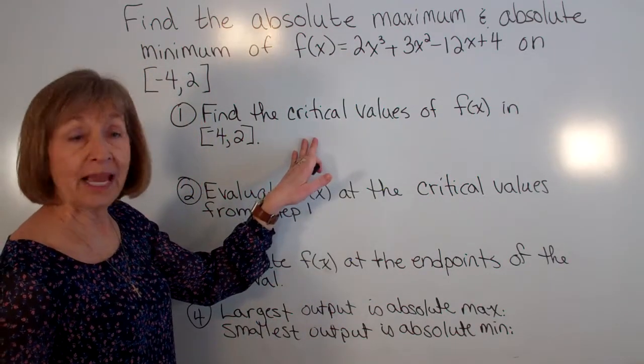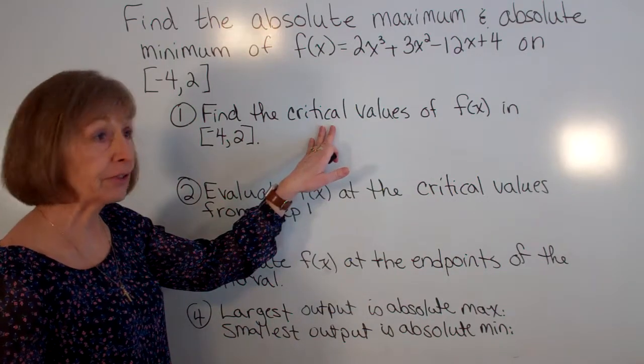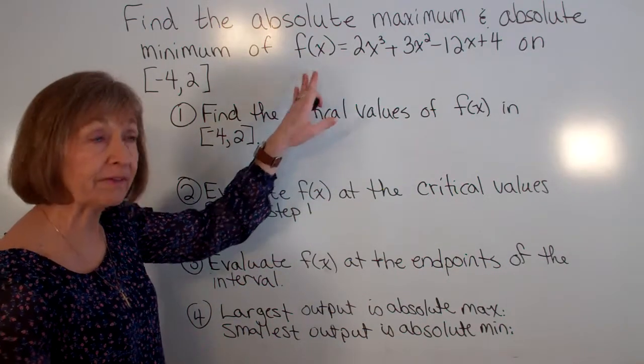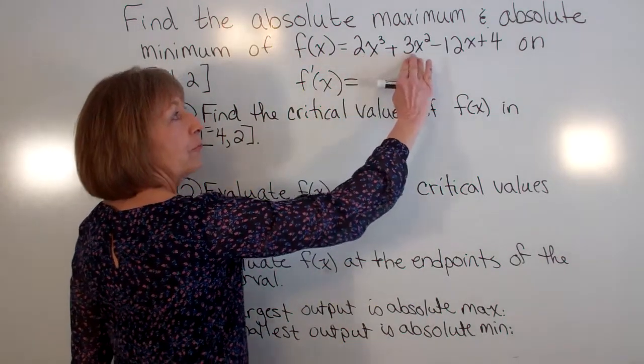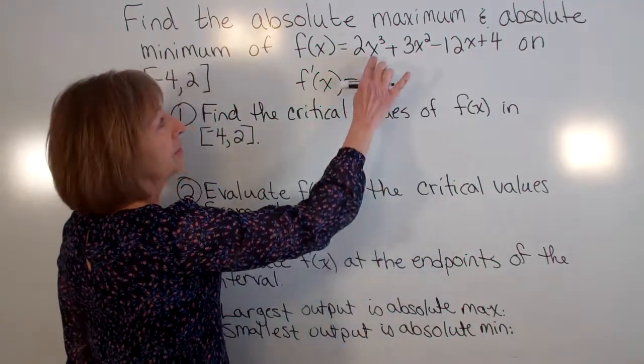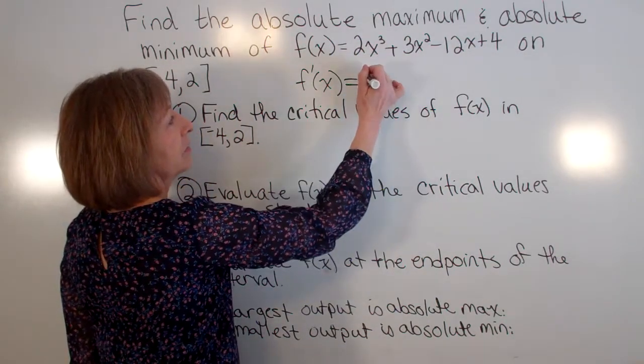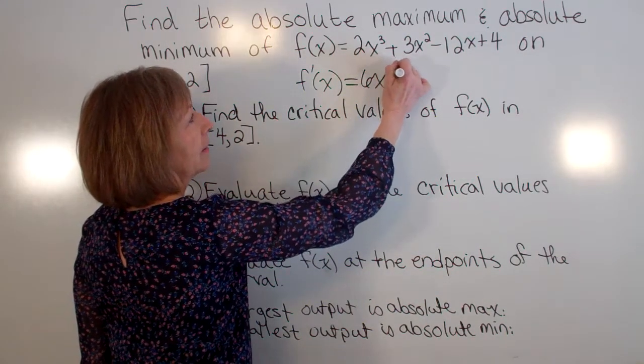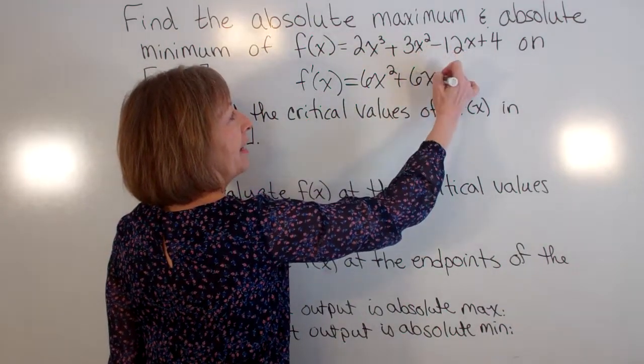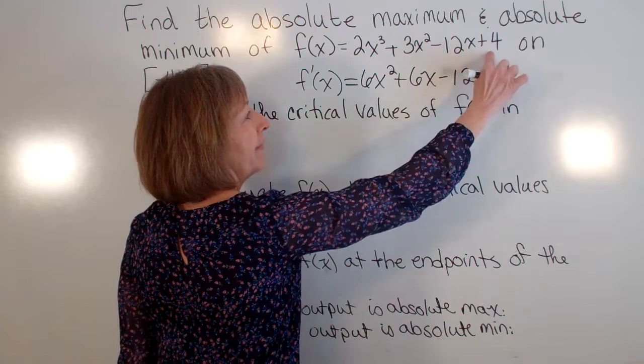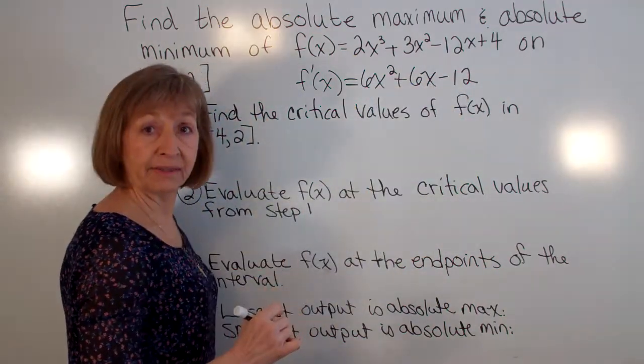So let's look at what we have here. To find the critical values of the function we need to take the derivative. So our derivative f'(x), we're going to do term by term derivatives. So this will be 6x² + 6x - 12 and then plus zero. So here's our derivative.